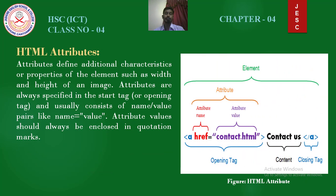HTML attributes. Attributes define additional characteristics or properties of the element, such as width and height of an image. Attributes are always specified in the start tag or opening tag and usually consist of name-value pairs like name equals value. Attribute values should always be enclosed in quotation marks. Here is an example: an anchor tag is used, with the opening tag and closing tag. The attribute name is href, that means hyper reference, and the attribute value is contact.html — this is the name of a page.